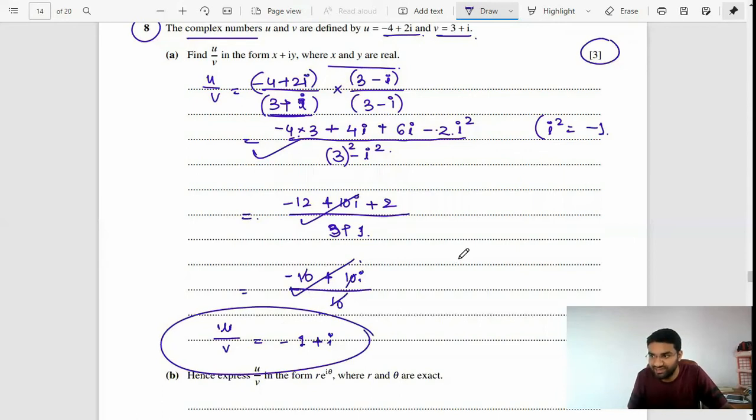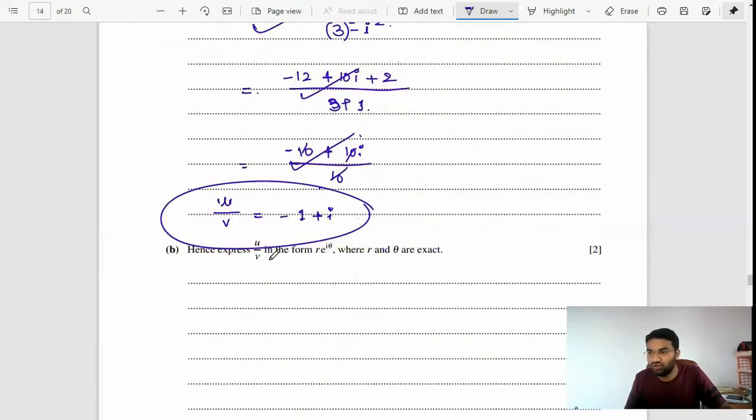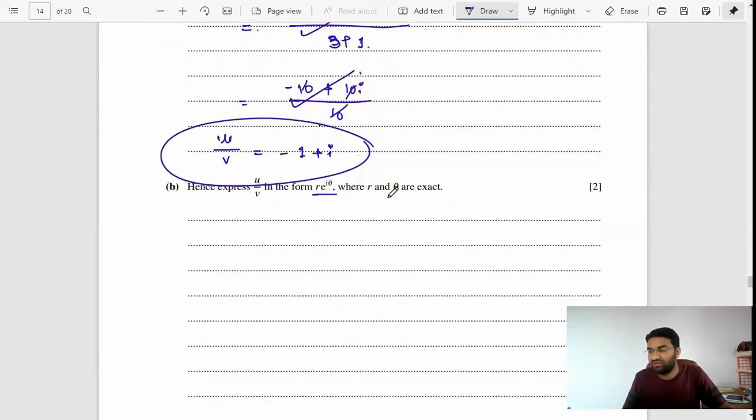Next, express u over v in the form r e raised to i theta, where r and theta are exact values. Here r means the modulus of u over v. The modulus means you take the square root of the constant squared plus the coefficient of i squared.